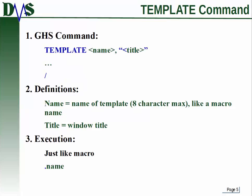The template command is how you do all of this, and it looks a lot like a macro command — it works pretty much the same way. You have to start by declaring and defining it. The command is: template, a name, comma, and then a title in quotation marks. The name is the name of your template, just like a macro name — eight characters max. The title is what shows up in the window toolbar when the template pops up. After you define it, you still have to execute it, just like a macro, using dot name — whatever the name of your template is — with a dot in front of it.